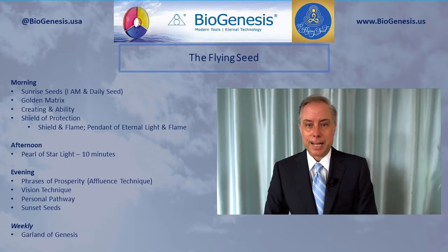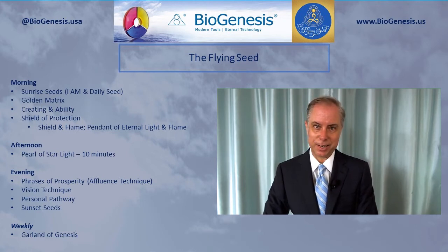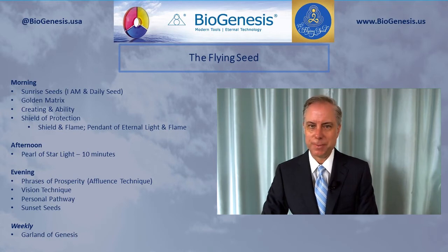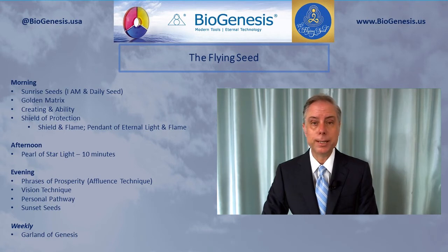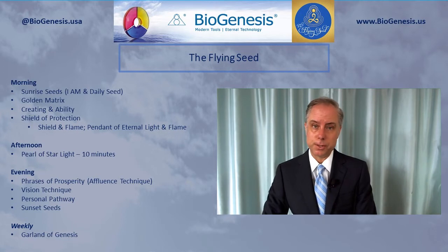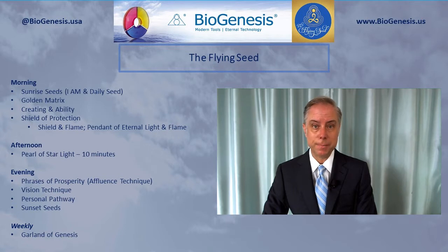A couple of weeks ago I went over what Lantos said would be a good schedule on a daily and weekly basis, and I heard that for many of you it was just too much. So I want to make clear this is not a requirement. The sunrise seeds could be just three minutes for the I am seeds and another three minutes for the daily seed — six minutes minimum in the morning. The sunset seeds are three to five minutes each with only three of them, so just nine minutes.